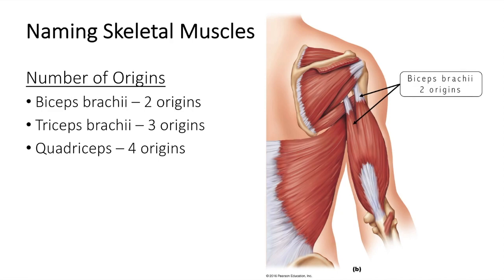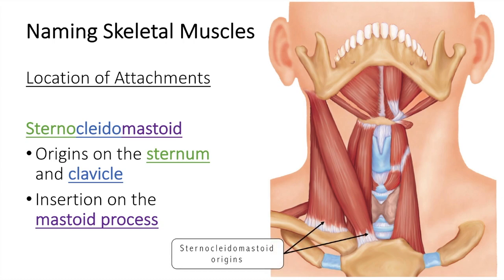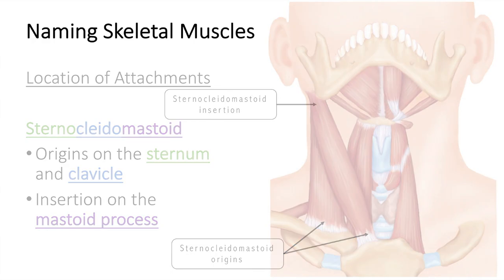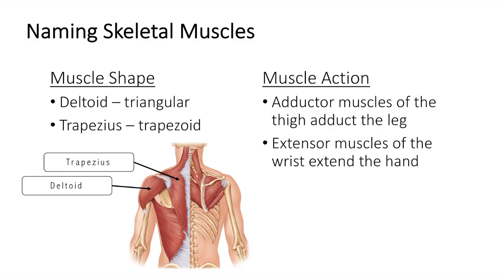The location of the muscle attachments can also help you name the muscle. For example, the sternocleidomastoid muscle has its origin on the sternum and clavicle, and inserts on the mastoid process. Muscle shape and muscle action can also provide clues — the deltoid muscle is roughly triangular, and the trapezius muscle resembles a trapezoid. All the adductor muscles of the anterior thigh bring about adduction of the leg, and all the extensor muscles of the wrist extend the hand.